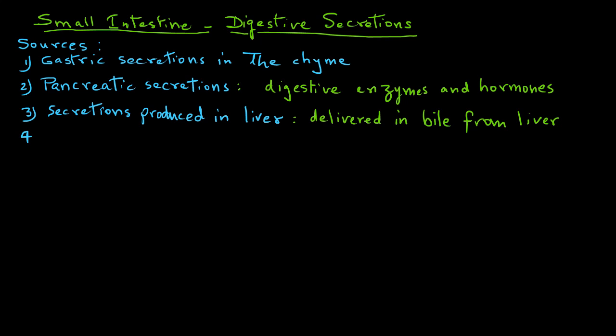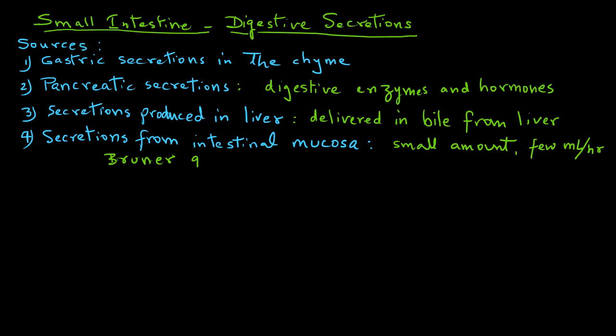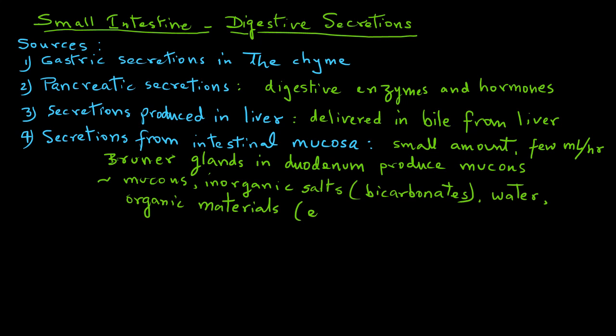The fourth source are the secretions from the intestinal mucosa itself. However, these secretions are usually quite small in amount, just a few milliliters per hour. These secretions are produced by the Brunner glands present in the duodenum and they produce mucus, inorganic salts containing bicarbonates, water, and enzymes.